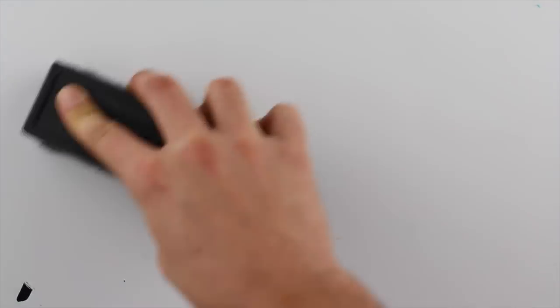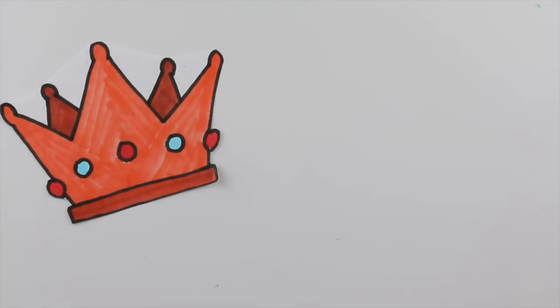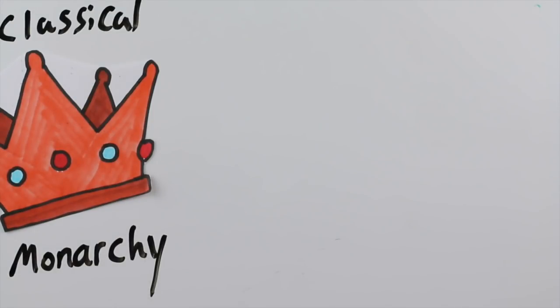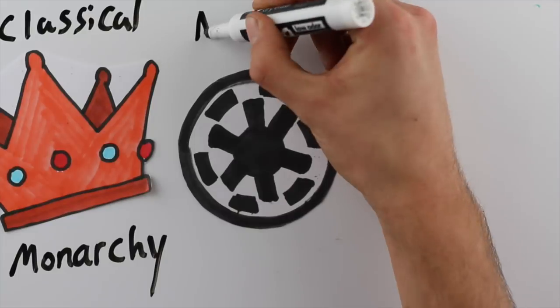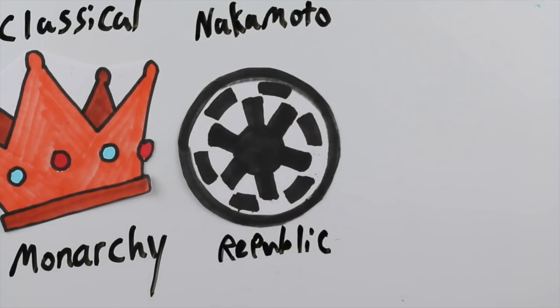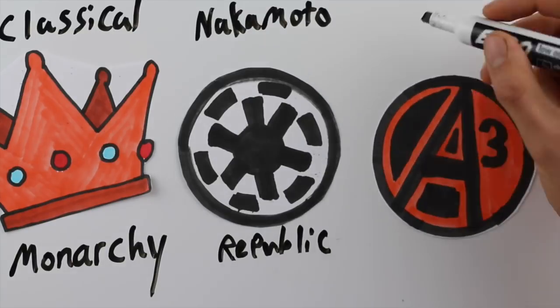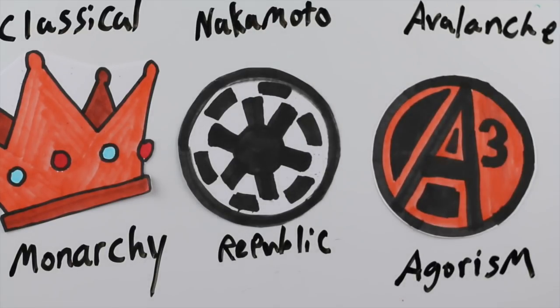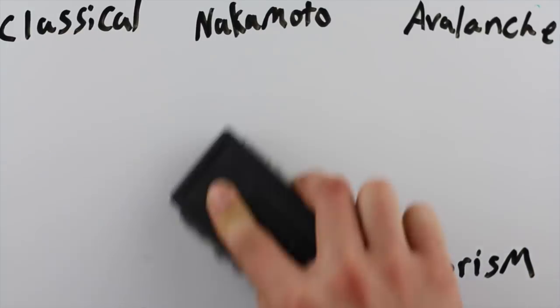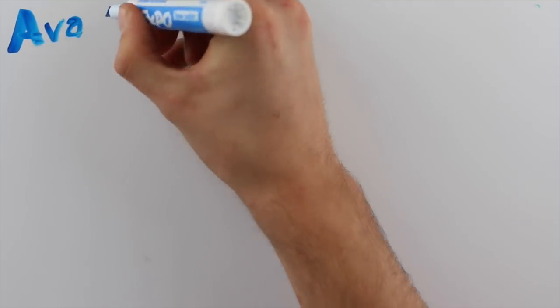Now, I'm going to get absolutely destroyed in the comments section for making these analogies, but a simple analogy is that Classical Consensus is like a monarchy, a royal family of nodes. Nakamoto Consensus is sort of like a republic. Miners are like officials that sort of represent the will of the people. And Avalanche would be like agorism, or maybe a democracy without officials. It's the individual says what goes on without any elected official of any kind. It's leaderless in nature.